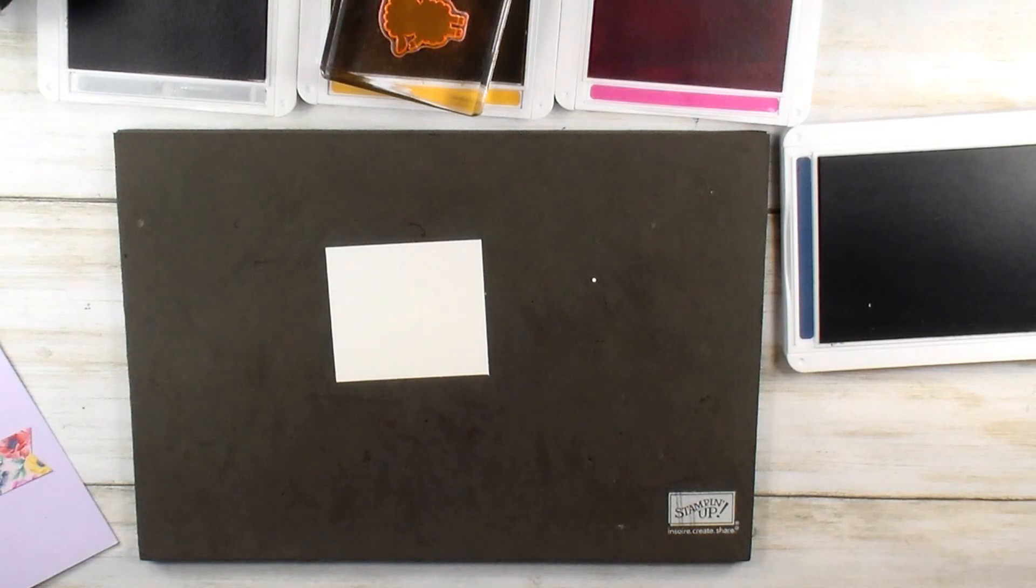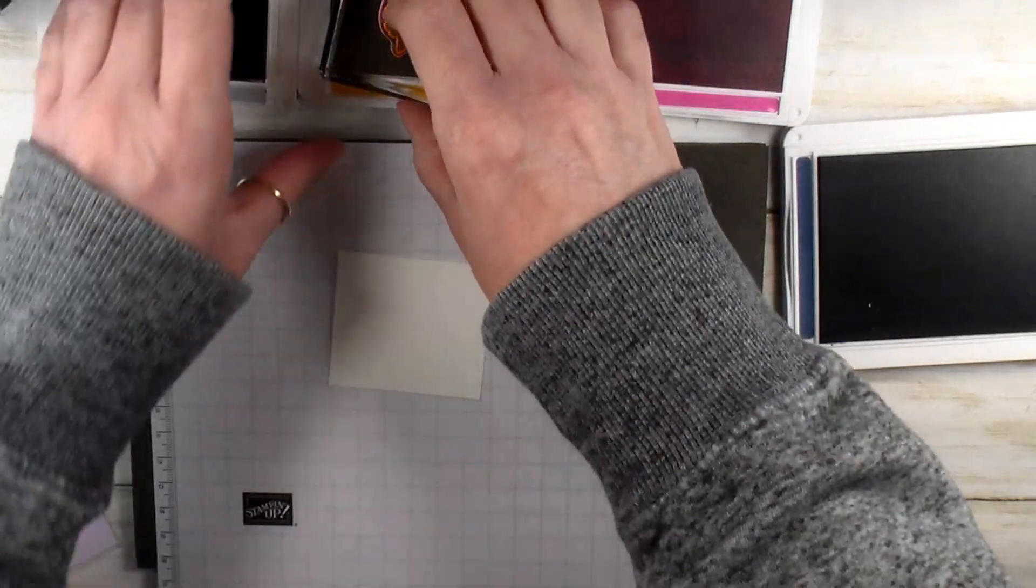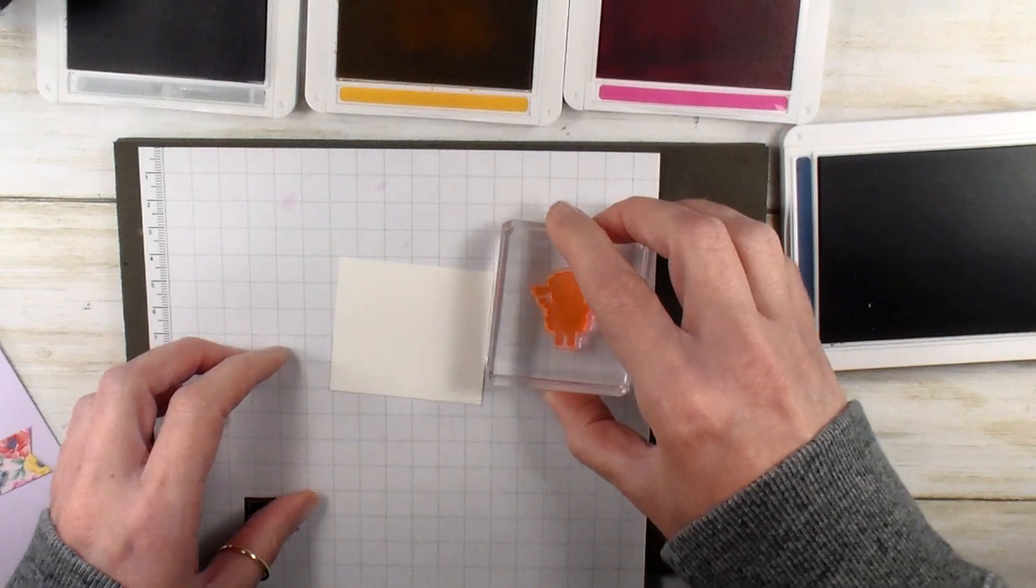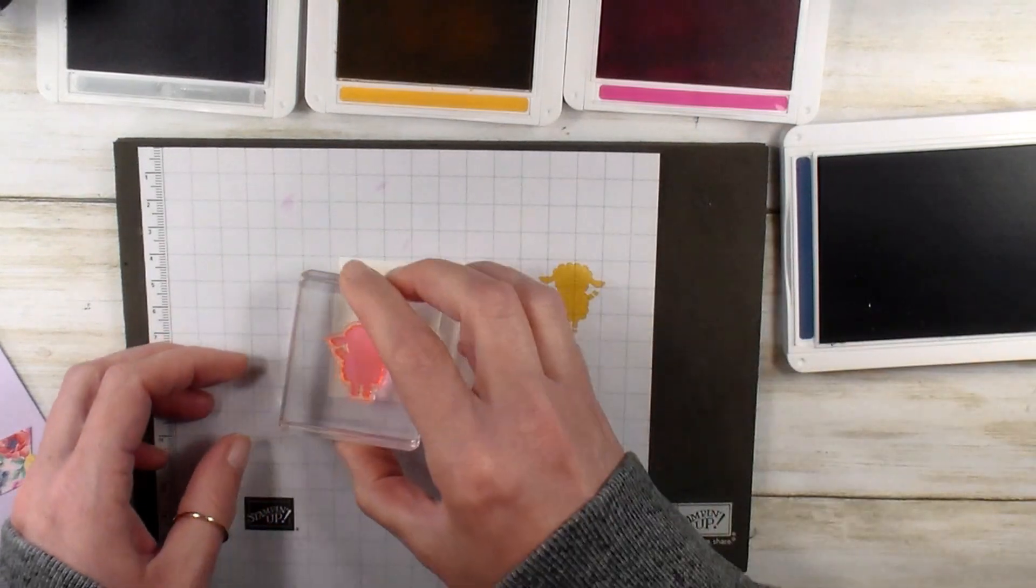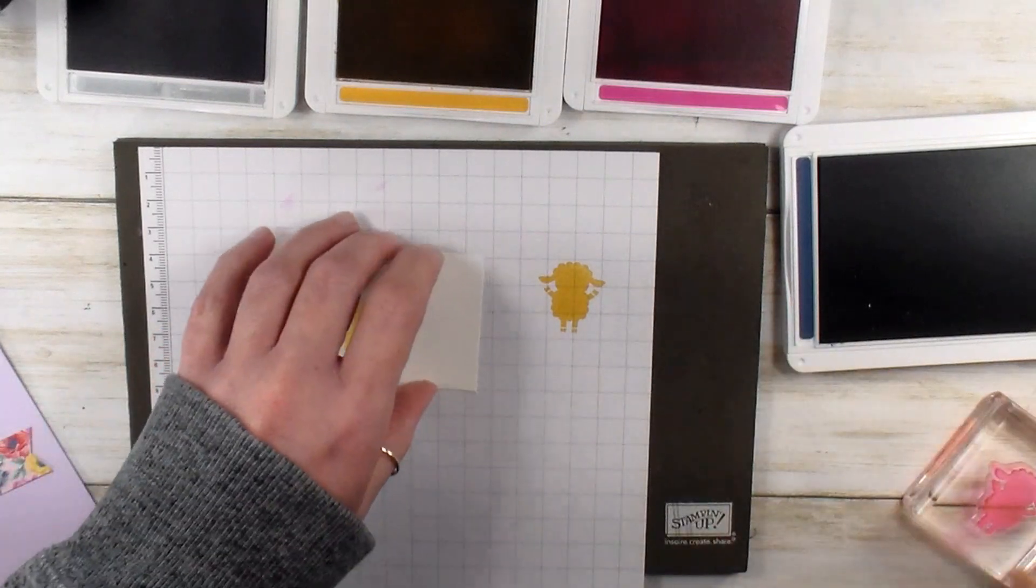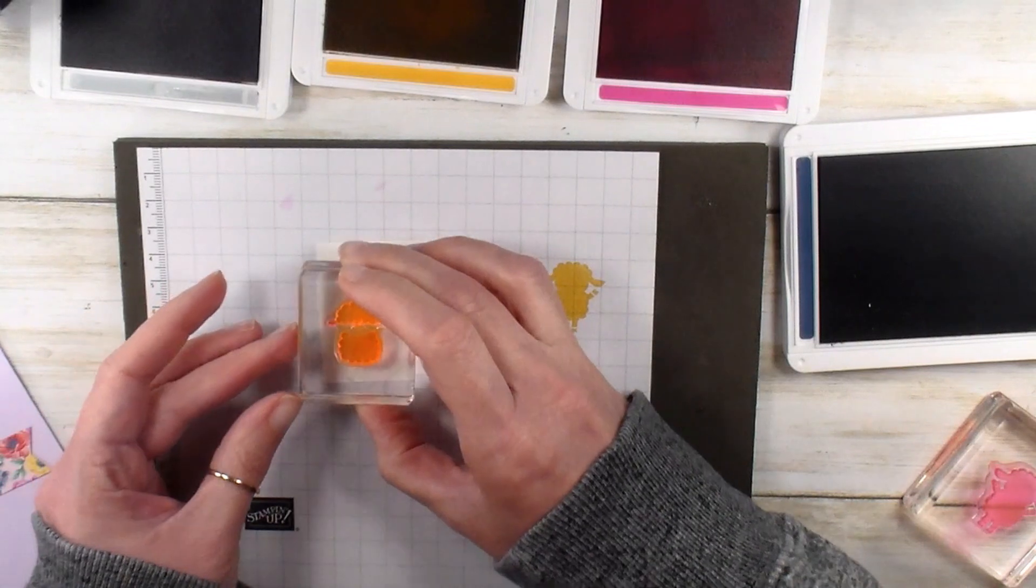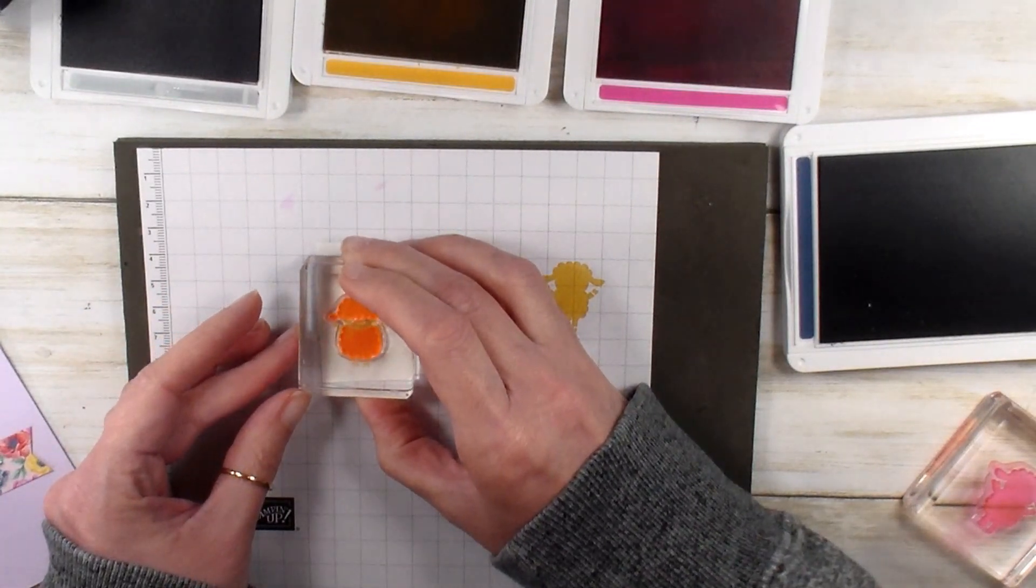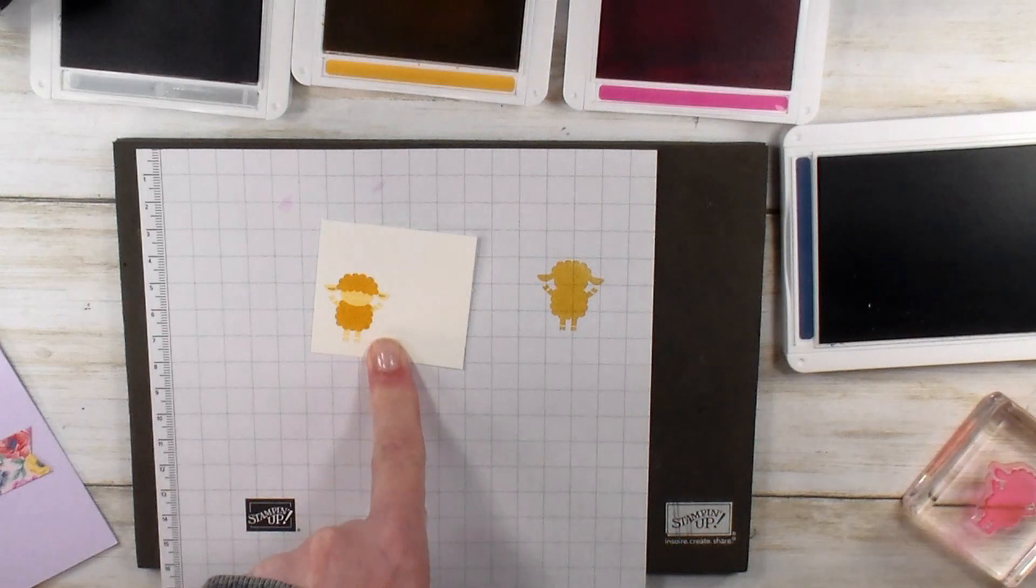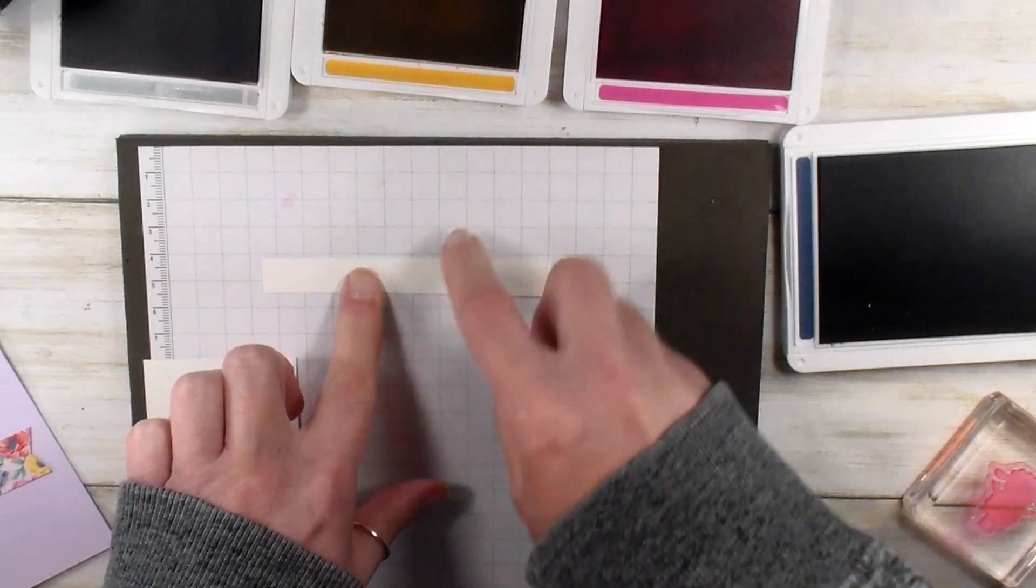Let me grab a little piece of my Stampin' Up! grid paper here, because we are going to do second generation stamping. So we're going to ink up in Bumblebee. We're going to stamp the sheep off on our scratch paper and then on our cardstock. Then we need our little sheep pajamas. We've got Bumblebee, and we're going to just layer that right up on top. And now we've got a two-tone Bumblebee sheep. Isn't that adorable?